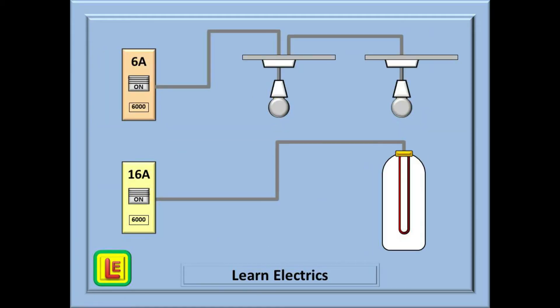Here we have two more common radial circuits. A lighting circuit is a radial circuit — the cable leaves the 6 amp breaker and visits each luminaire on that circuit. When it gets to the last lamp holder it stops; it does not return to the consumer unit. Likewise with the water heater: the cable goes from the breaker to the water heater and then stops there.